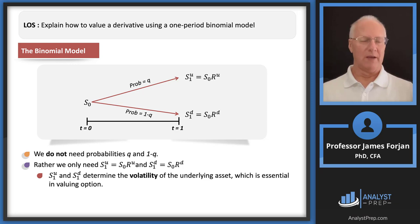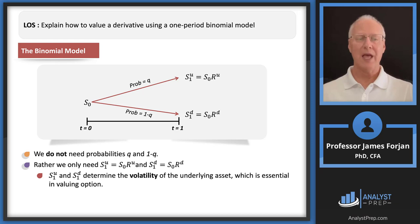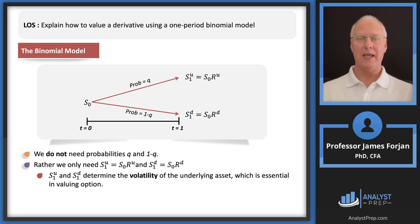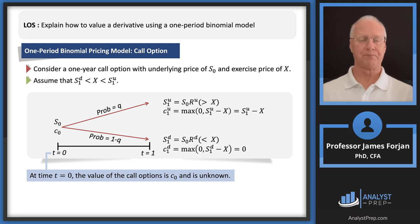We do not need the probabilities q and one minus q — all we need are those gross returns. And as mentioned earlier, S1 superscript U and D determines the volatility of the underlying asset, which plays a huge role in how much we're willing to pay for a call or put option. All we've done to this point is model stock price paths: stock price today is 100, tomorrow could be 110 or 90.